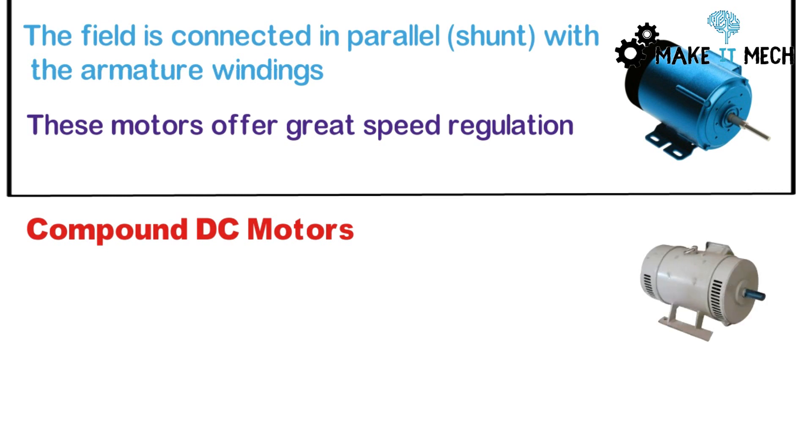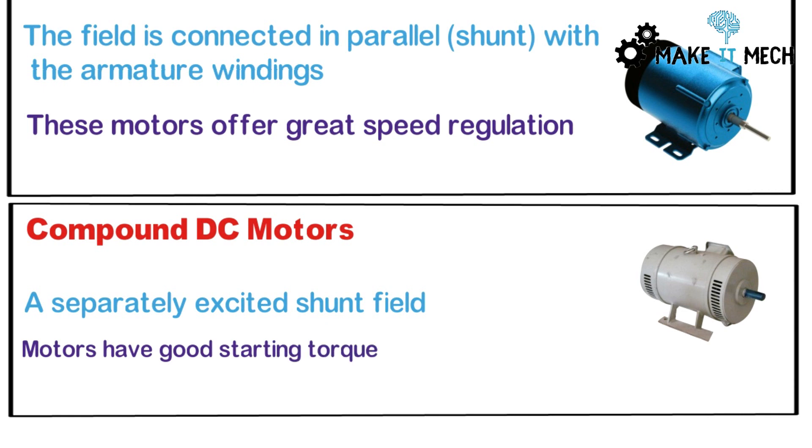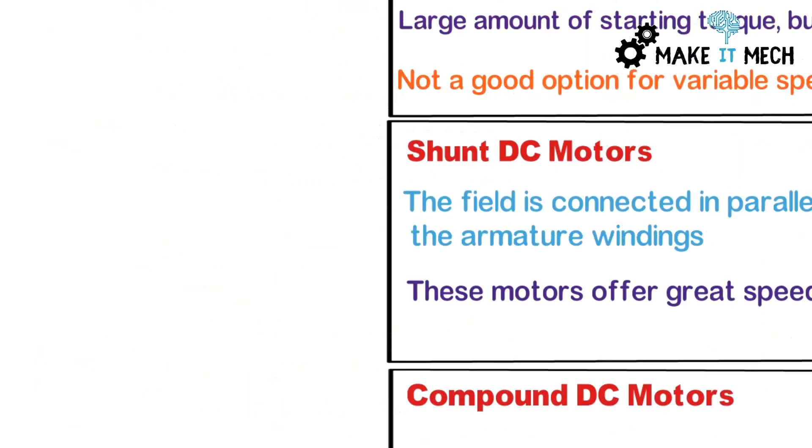Compound DC motors have separately excited shunt fields. The series and parallel connection of the field winding to the armature. These motors have good starting torque but are not suitable for variable and regulated drive applications.